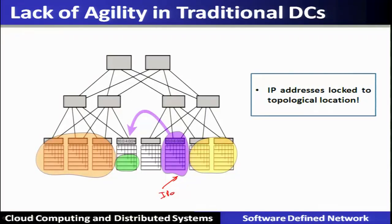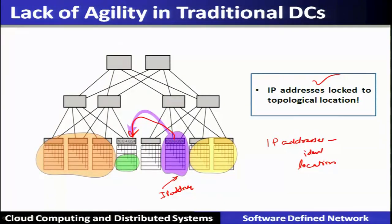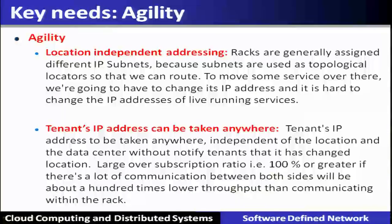Servers and their IP addresses are locked to topological locations. IP addresses are overused — meant not only for identification but also for locating the server — which is what prevents agility. The second key requirement is location independent addressing, meaning addressing should be independent of location. Racks are generally assigned different IP subnets used as topological locators, and it is hard to change the IP address of a live running service, risking disruption.